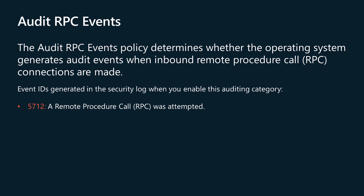The Audit RPC Events policy determines whether the operating system generates audit events when inbound remote procedure call (RPC) connections are made. RPC calls are pretty rare, so you'll know if you need to audit them or not. Only one event ID is related to this audit policy: 5712 — A remote procedure call (RPC) was attempted.